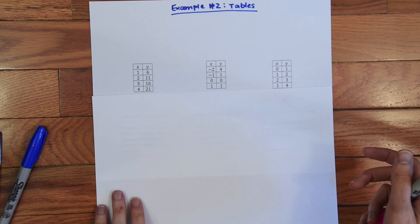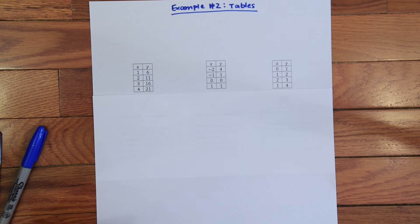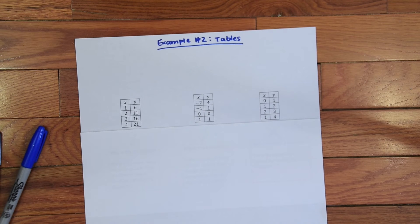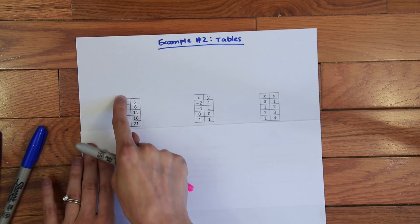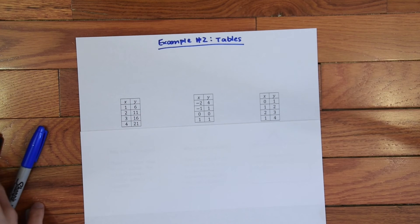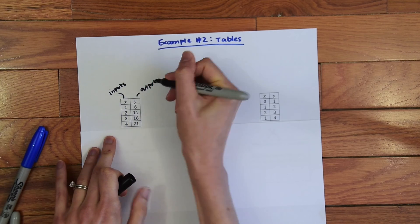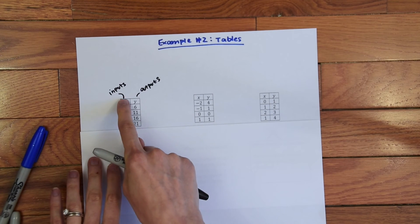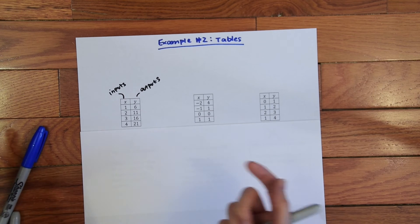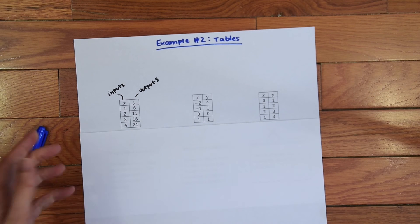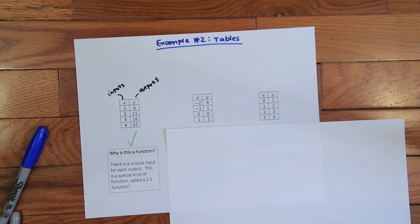So another way you might see functions and need to identify them is by looking at tables. So here's three different examples of tables and let's see if each are functions. So we're going to do the same thing, we're going to look at the inputs and outputs. So this time they're labeled X and Y but this is still really the inputs and outputs, and we want to ask ourselves are there any repeating inputs. And the answer is no, so we know that this is a function. And if you notice over here the outputs they don't repeat either so this is actually a one-to-one function. So yes this is a function.